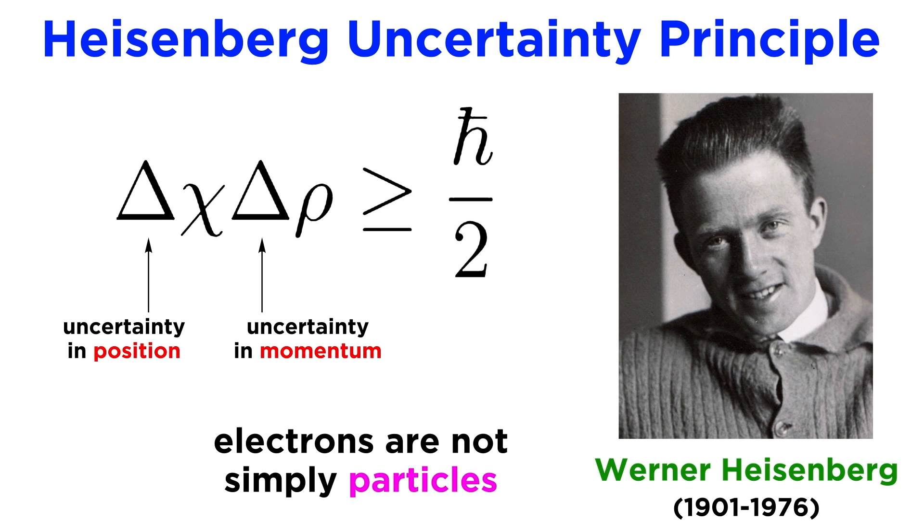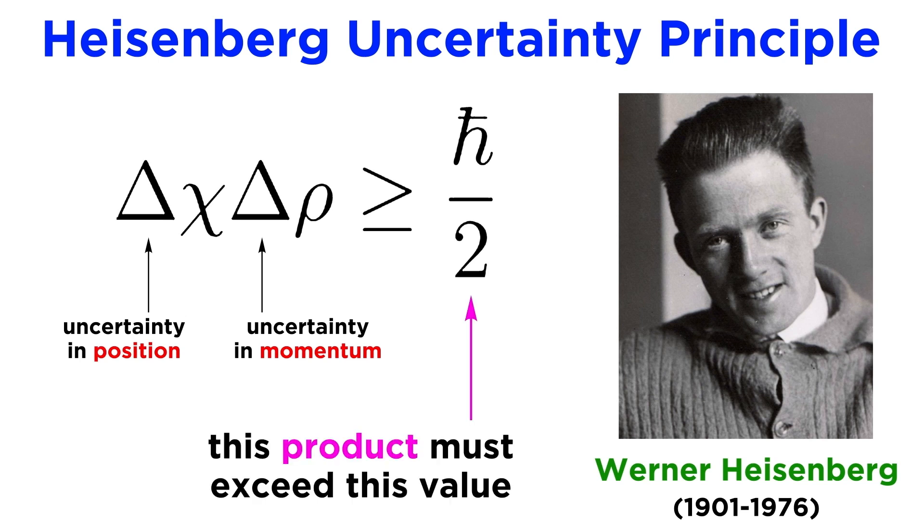If we could know both the position and momentum of an electron, we could describe it merely as a particle, but we've learned that an electron is not just a particle, it's also a wave. So it will defy any attempt to have its behavior reduced to strictly particle-like determinacy. This concept is summarized in the Heisenberg uncertainty principle. Delta x is the uncertainty in position, and delta p is the uncertainty in momentum, and we see that their product must be greater than h bar over two, where h bar is equal to h over two pi.